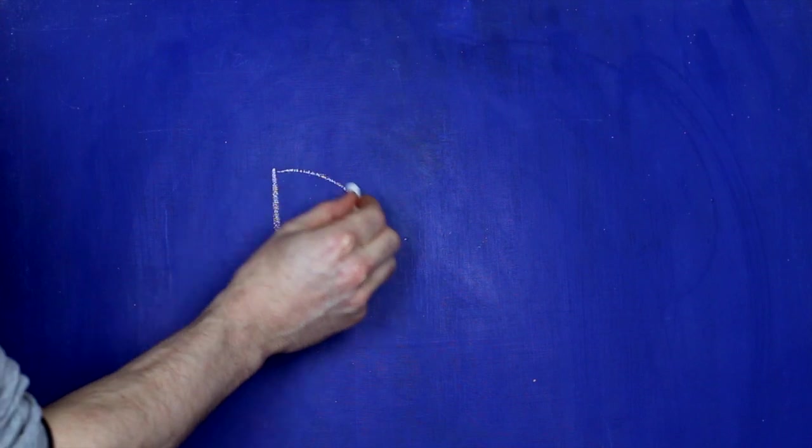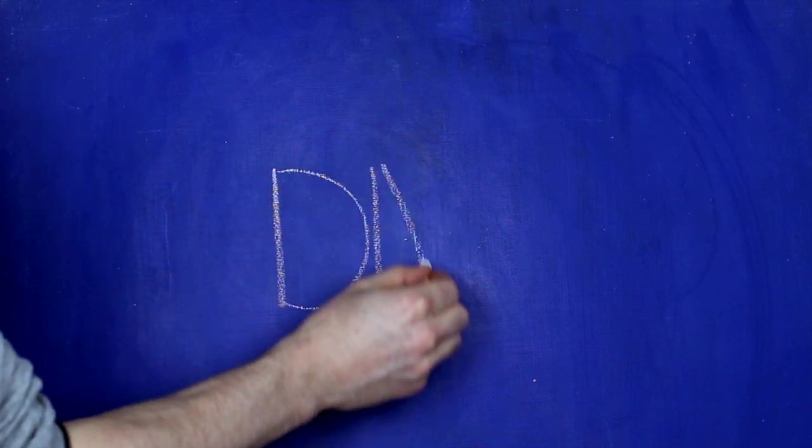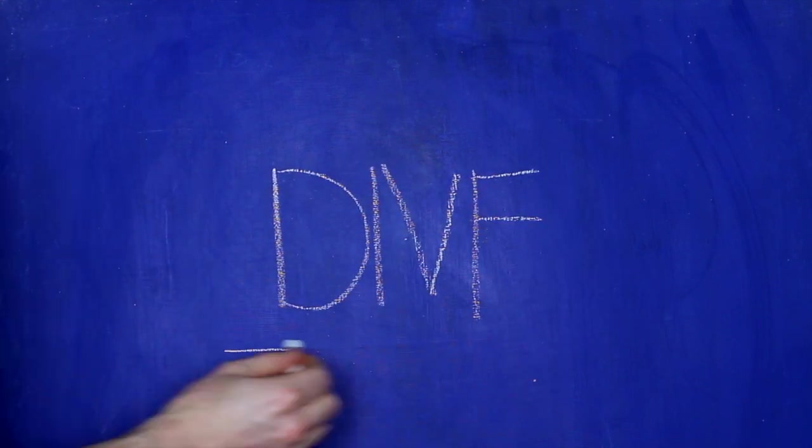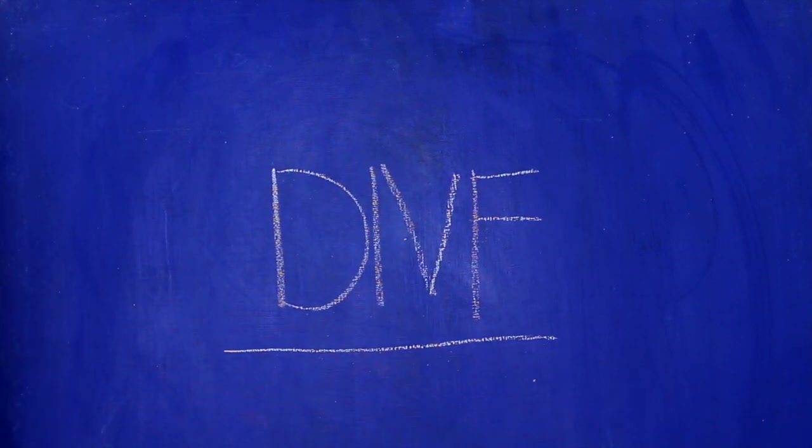Today we're talking about disjunctive normal form. A sentence is in disjunctive normal form when it's a disjunction of conjunctions of literals.